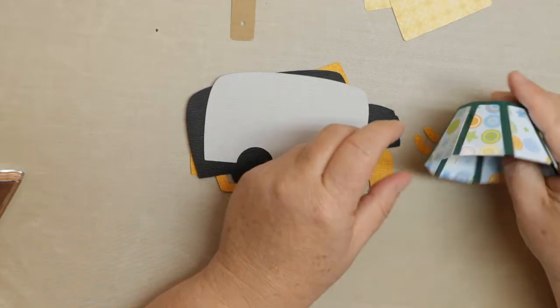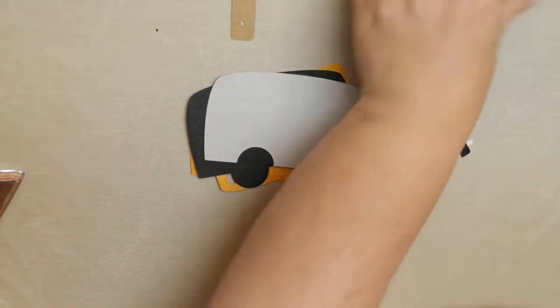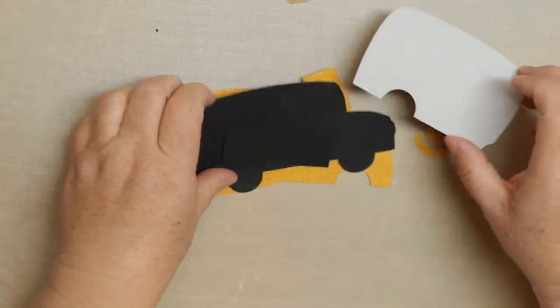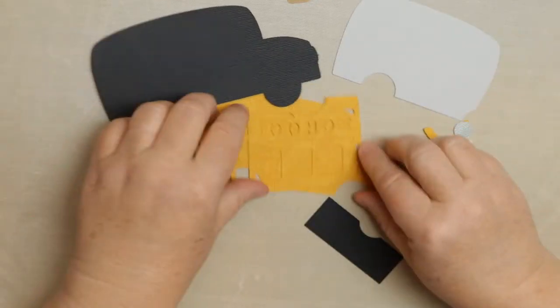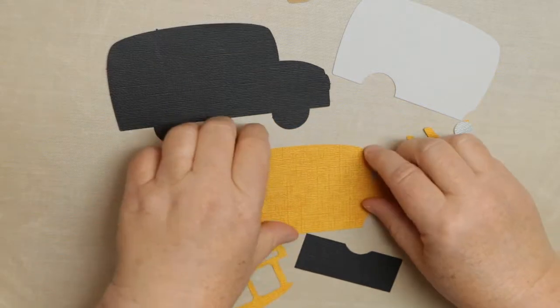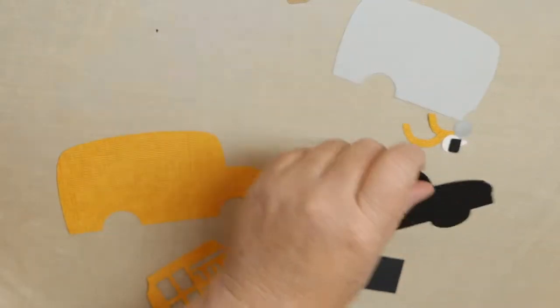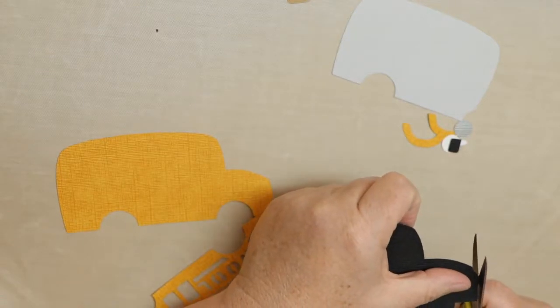So with this one I want to piece together the bus first so that's probably the hardest part of this whole bag. It's pretty simple to put together but first I like to put them in order of how they need to be pieced from the bottom piece first.